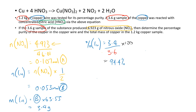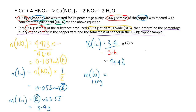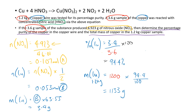Now have I finished the question? No — I have the percentage purity of the copper, but I still need the total mass of copper in the 1.2-kilogram copper sample. The 1.2 kilograms is the impure mixture (red). Since it's 94.4% copper: 1.2 kg = 1200 grams × 94.4 ÷ 100 = 1133 grams. That's the total mass of copper in the 1.2-kilogram sample.